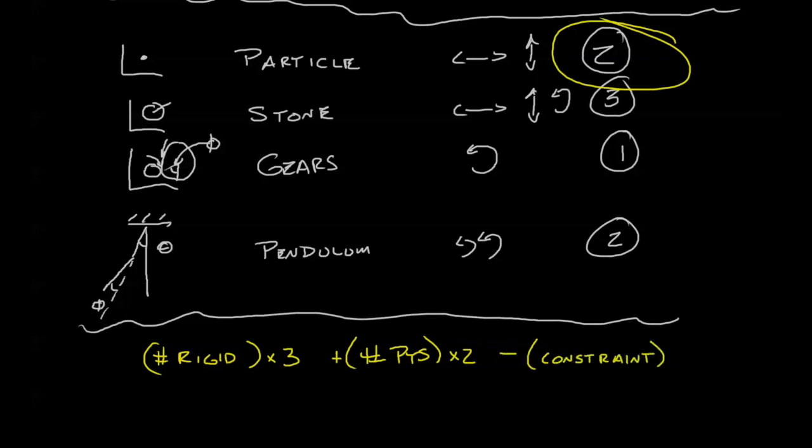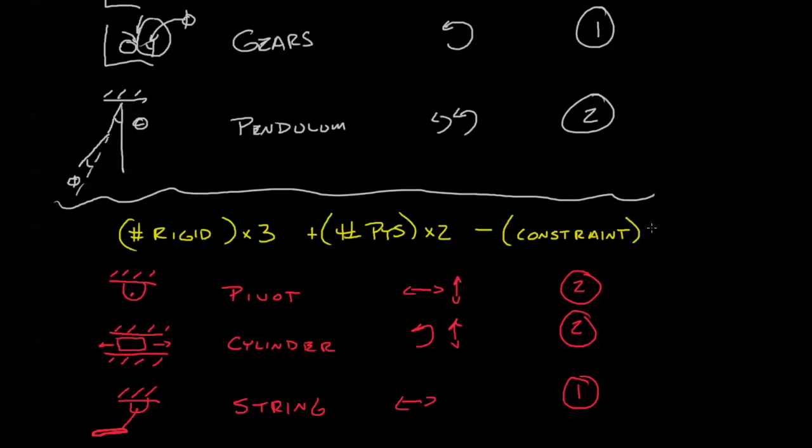So what are some good examples of constraints? I've gone ahead and created a little red table similar to the ones above it, just looking at constraints. The first one is a pivot. A pivot allows a rigid body to rotate, so it doesn't allow it to translate. It doesn't allow it to move. So it's taken away two constraints. So the circled number on the right is two.